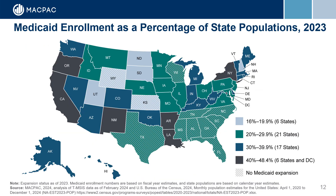Underneath these national trends, there is considerable state variation. As the map shows, states vary greatly in their population's share of Medicaid enrollment, ranging from 16% to 48% of the population on Medicaid in 2023. These enrollment rates reflect a variety of factors, such as state economic conditions and eligibility decisions, including whether to expand Medicaid under the new adult group. States that did not expand Medicaid are indicated with hatched lines. Note that North Carolina has since expanded Medicaid in December 2023.